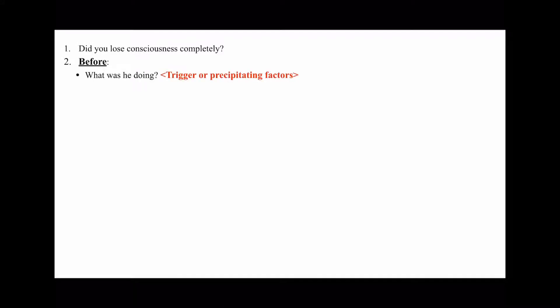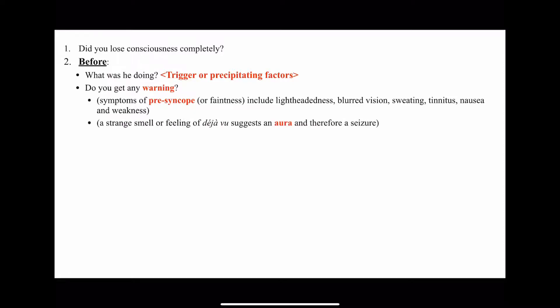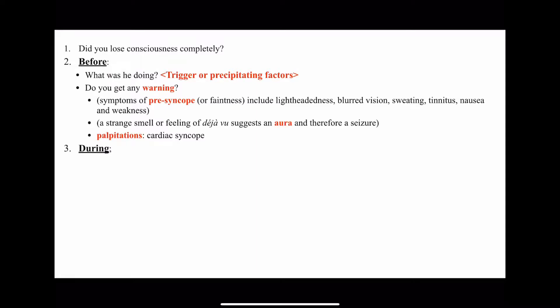In history taking, first determine whether the person had a complete loss of consciousness. Then ask what happened before, during, and after the event. Before the event: ask what the patient was doing — looking for triggers such as prolonged standing, micturition, or change in posture. Ask about warning signs including presyncopal symptoms: lightheadedness, blurred vision, sweating, tinnitus, nausea, and weakness. Ask about strange smells or déjà vu suggesting an aura and therefore a seizure, and palpitations pointing towards cardiac syncope.